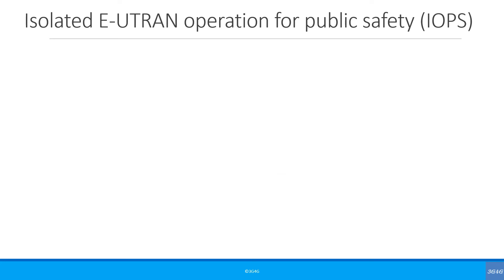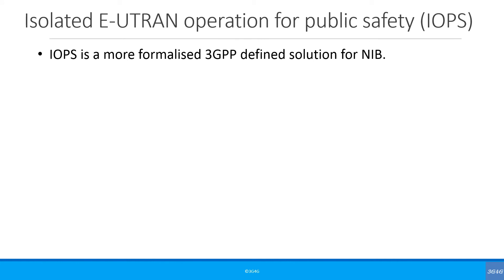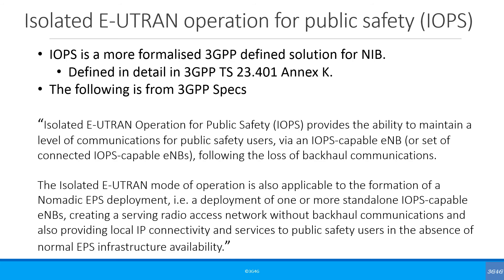Let's change topic a little and look at Isolated E-UTRAN Operation for Public Safety, or IOPS. Network in a Box is more of an industry-defined term; IOPS is, as per my understanding, the 3GPP-defined term for NIB and is detailed in 3GPP TS 23.401. The spec states: IOPS provides the ability to maintain a level of communication for public safety users via an IOPS-capable eNodeB, or set of connected IOPS-capable eNodeBs, following the loss of backhaul communications.